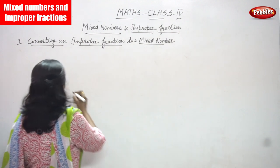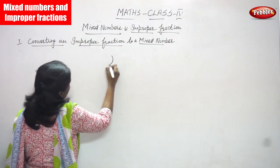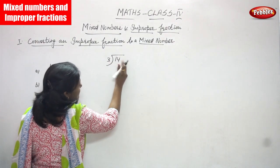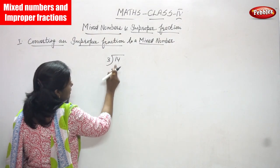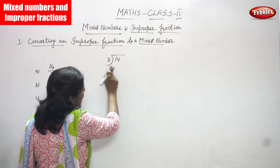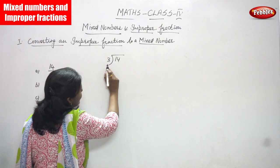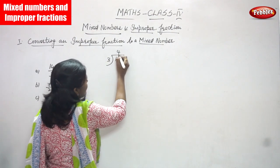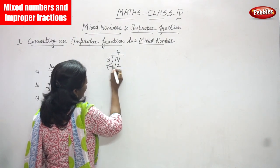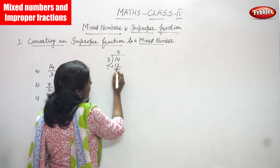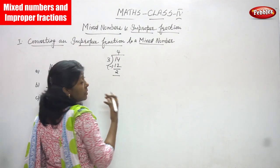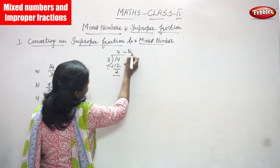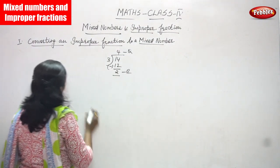Let's start. That is 14 by 3, so now we are going to divide. 14 is the dividend and 3 is the divisor. Now we are going to divide 14 by 3 — you have to use the 3 times table. 4 threes are 12. So you subtract: 14 minus 12 you get 2. So 4 is the quotient and 2 is the remainder.